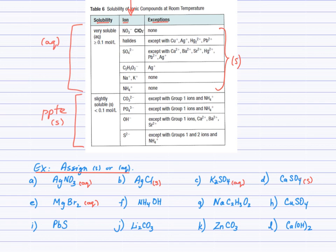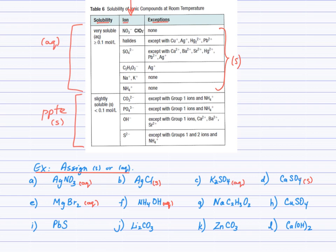Part F, ammonium hydroxide: looking up ammonium, it is always aqueous without exception — so we write AQ. Part G, sodium acetate: looking down, we find acetate, which is always aqueous except with silver. It's paired with sodium here, so that supports aqueous — and sodium compounds are always aqueous with no exceptions.